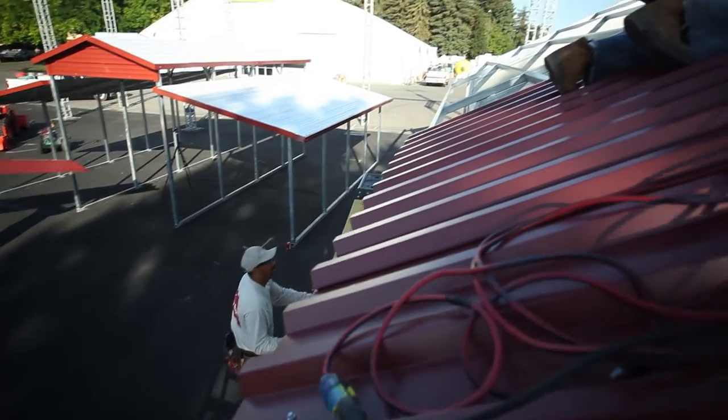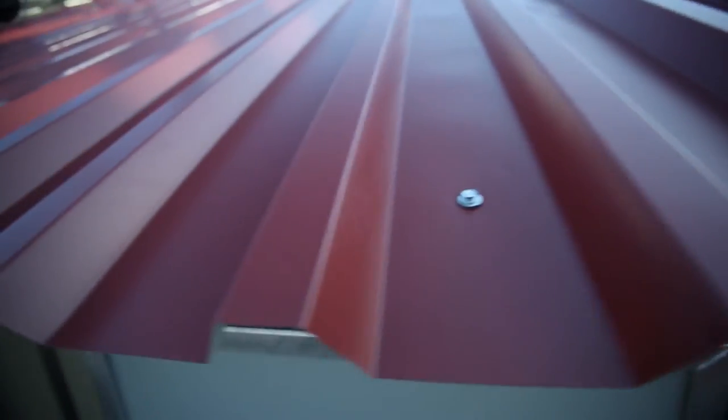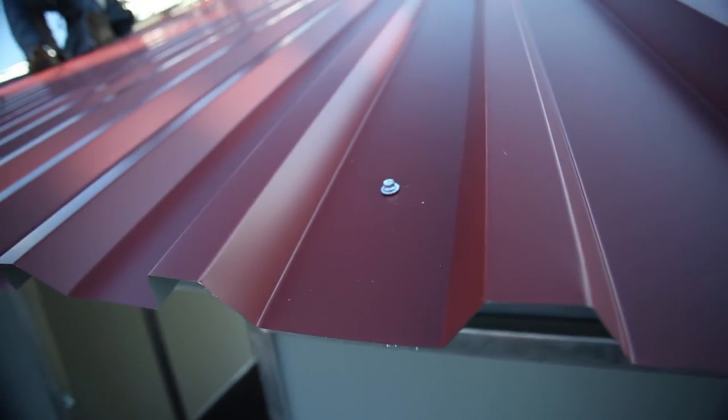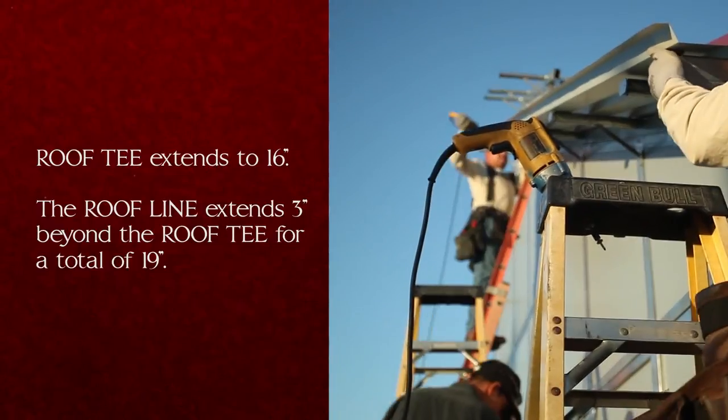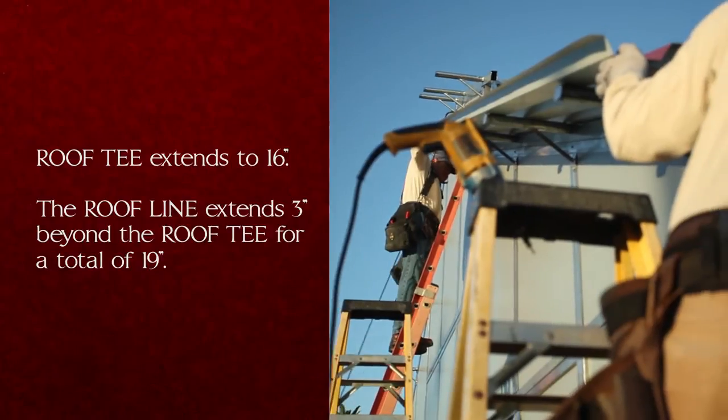Refer to your barn plans for proper screw placement, which can vary based on jurisdiction and engineering requirements. To finish the roofing, the last sheet may be overlapped or cut to achieve proper eave overhang of approximately 16 inches.